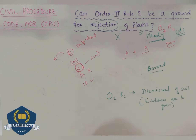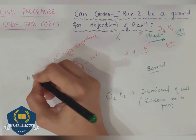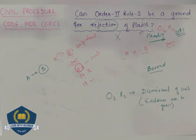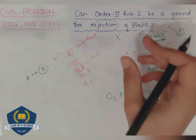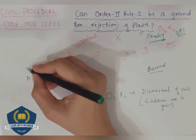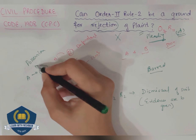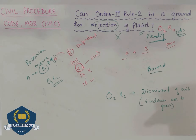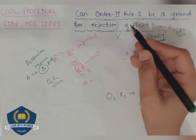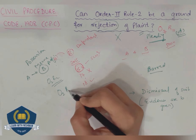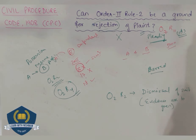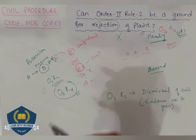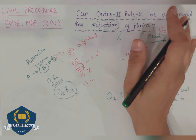Now consider this question: In a suit, A claims recovery of possession of immovable property from B. Later, A files another suit claiming mesne profits from the same property. Will the second suit be hit by Order 2 Rule 2? As per Order 2 Rule 4, recovery of possession and mesne profits are two distinct causes of action. Therefore, Order 2 Rule 2 will not apply here — Order 2 Rule 4 will apply, as possession and mesne profits are different and distinct things, so the second suit will not be dismissed.